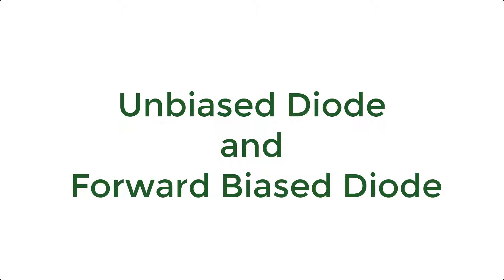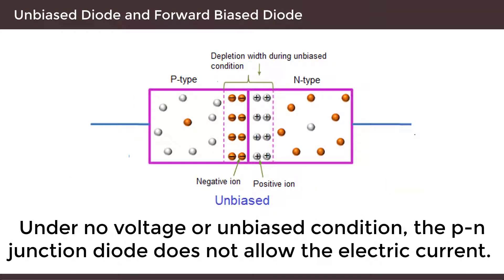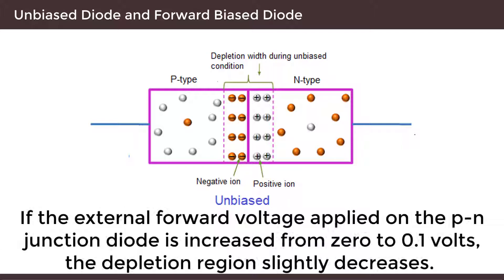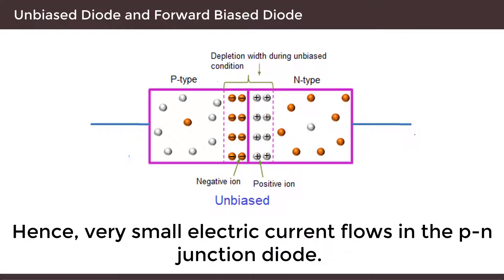Now let's look into unbiased diode and forward biased diode. Under no voltage or unbiased condition, the PN junction diode does not allow the electric current. If the external forward voltage applied on the PN junction diode is increased from 0 to 0.1 volts, the depletion region slightly decreases, hence very small electric current flows through the PN junction diode.